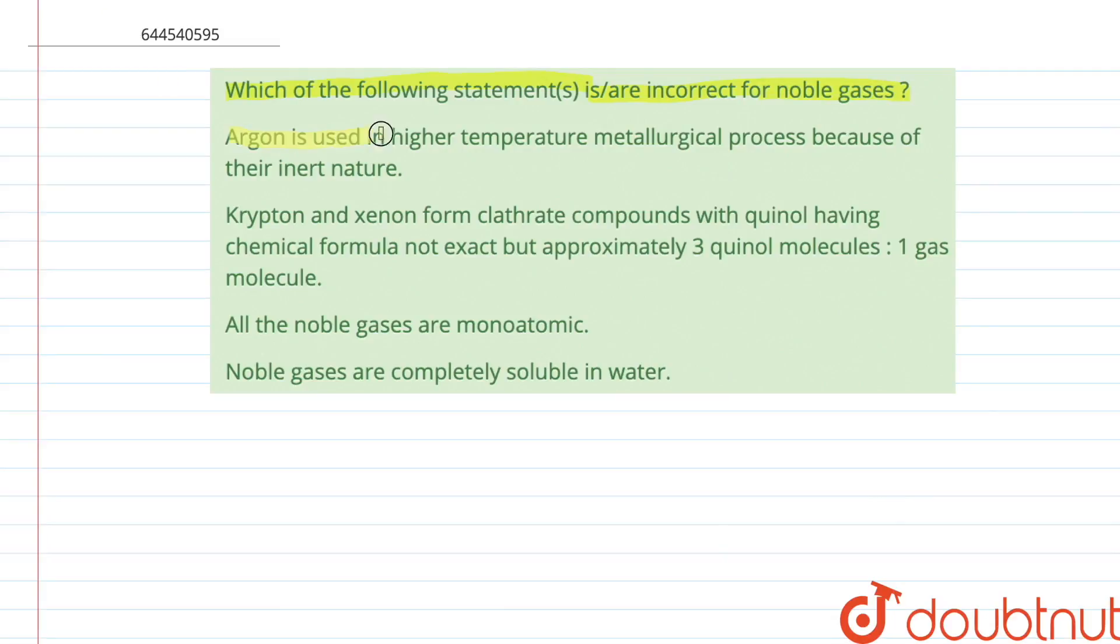The first one is: Argon is used in higher temperature metallurgical processes because of their inert nature. This given statement is correct since argon is a noble gas.